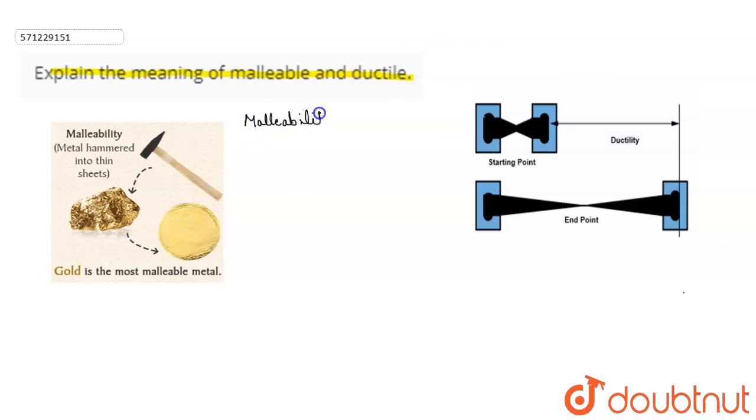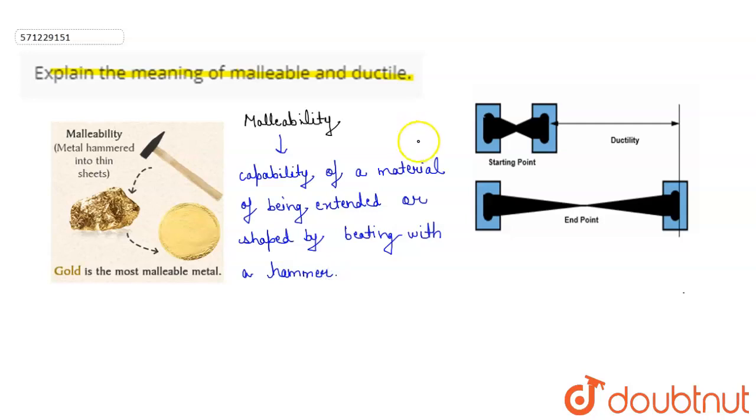It is the capability of a material being extended or shaped by beating with a hammer. So basically, materials which are able to be extended or shaped by beating with a hammer, those materials are considered to be malleable, and this property is considered as malleability.